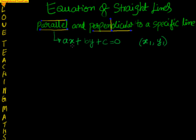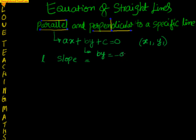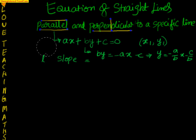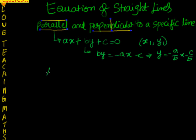How can we do this? From this equation, if we are able to find out the slope — since this is line l — let us find the slope of line l. If you take this equation: by equal to minus ax minus c, that gives y equal to minus a by b times x minus c by b. So the slope of l is equal to minus a by b.